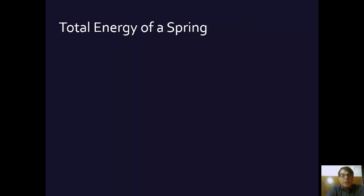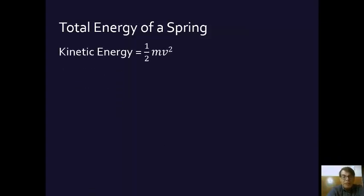So let's talk about the total energy of a spring that's in simple harmonic motion. We know that the kinetic energy of something can be found by using the formula ½mv². We take the velocity, square it, multiply it by the mass of the thing that's moving, and take half of that — and that tells us the kinetic energy of something, in this case a spring.